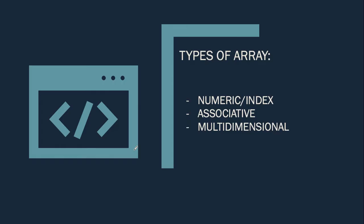Let's proceed about the types of an array. If we will talk about types of an array, we have three. First, we have numeric or what we call index type of array. We also have associative. We also have multi-dimensional type of an array, so we will talk about 2D and 3D types. For this video, we will talk first about numeric or index type. In our succeeding videos, I will talk about associative and multi-dimensional type of array.